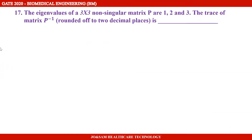The 17th question is from Engineering Mathematics. The eigenvalues of a 3 cross 3 non-singular matrix P are 1, 2, and 3. The trace of matrix P inverse, rounded off to two decimal places, is blank.